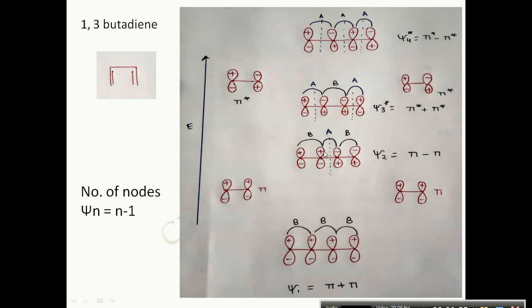The bonding interactions are between positive-positive lobes and negative-negative lobes, and the anti-bonding interaction is between positive and negative lobes. Because psi 2 has one anti-bonding interaction, it is slightly higher in energy and has one node. The number of nodes is calculated by the formula: node = n − 1, where n is the number of the molecular orbital. So for psi 1 we have 0 nodes, and for psi 2 we have 1 node.